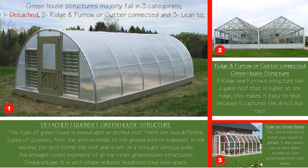We shall further concentrate on one of the three. Category one: we have the detached concept. Category two: the ridge and furrow, or the gutter connected. And category three: the lean-to — our third greenhouse structure category.